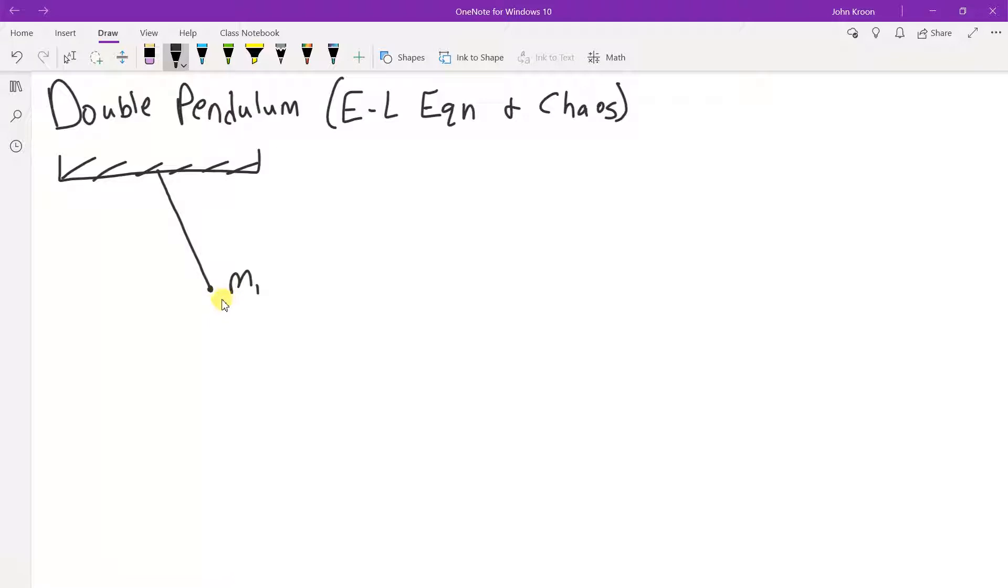But we're going to add just one more mass, let's call it m2, on the end of another pendulum. So the first mass is here, but the first mass also acts as a pivot for the frictionless pivot point for the second mass to swing on.